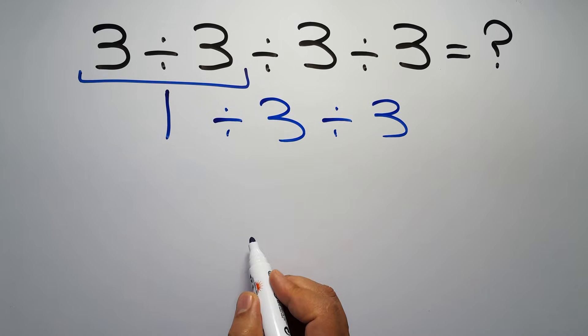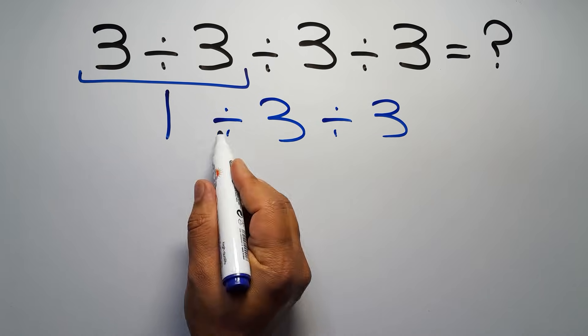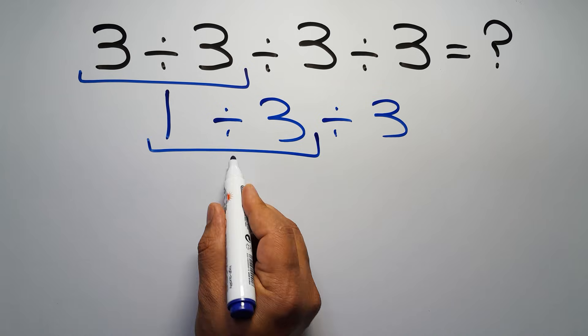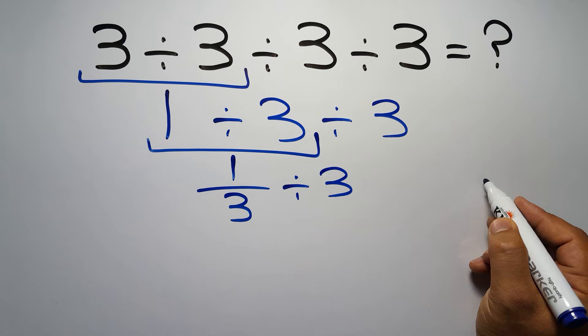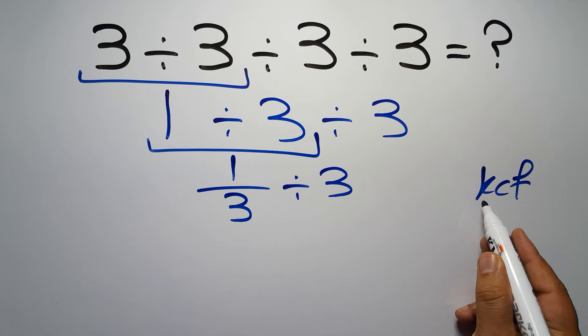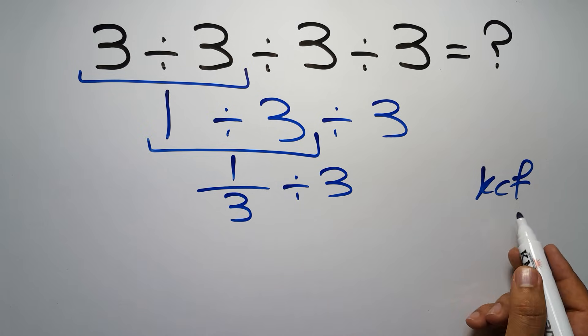Now we have to do this division. 1 divided by 3 can be written as 1 over 3, so 1 over 3 divided by 3. According to the KCF rule, K stands for Keep, C stands for Change, and F stands for Flip.